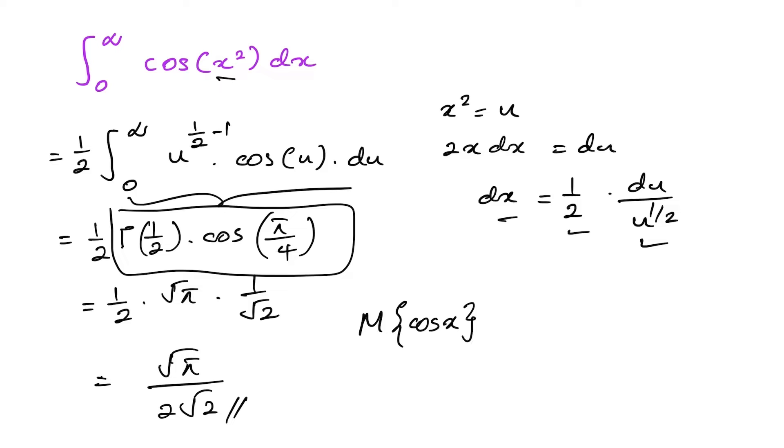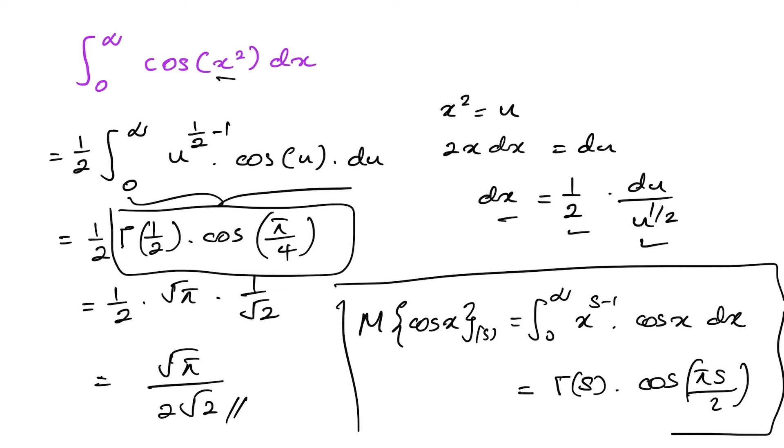The Mellin transform of cosine is equal to the integral from 0 to infinity of x to the s minus 1 times cosine of x dx. And we know this one is equal to gamma of s times cosine of pi s over 2. Okay, we used this formula. And we already proved this formula in the previous video. I will add the link in the description.